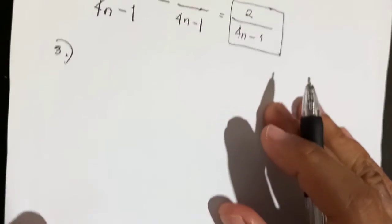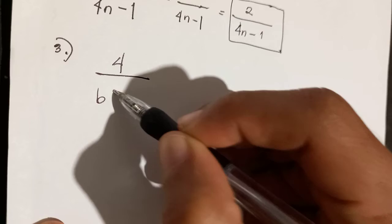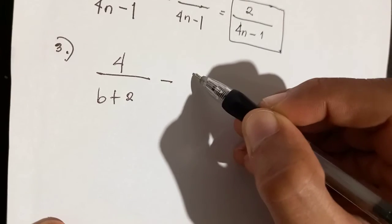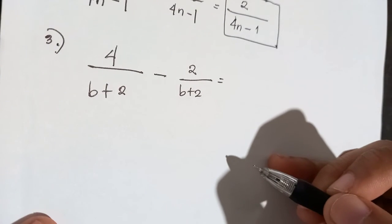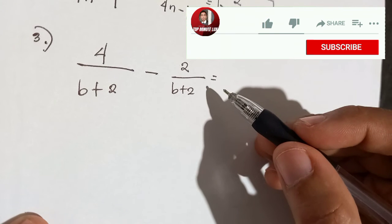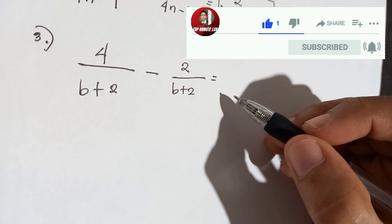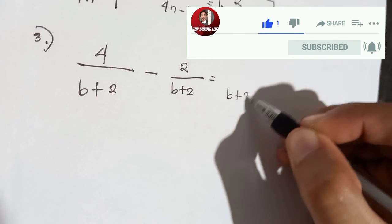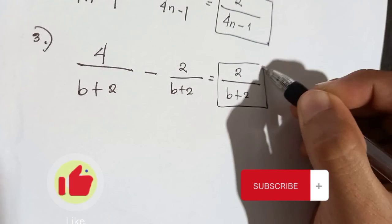Number 3. 4 over b plus 2 minus 2 over b plus 2. So from this example, it is very obvious that our denominator is common. 4 minus 2 will give you 2. That's the answer.